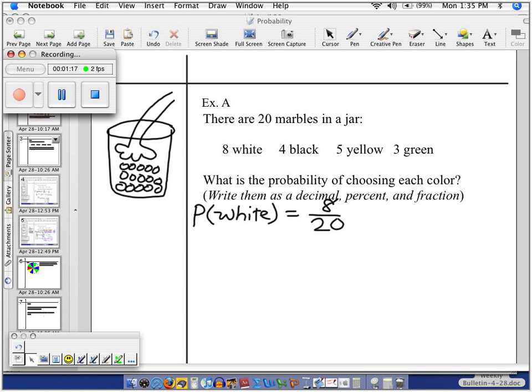So if I can label these, the top number is my desired outcome. This is what I'm actually wanting. I want to pull a white marble, in this case. So that number is on top of my fraction. And underneath is how many possible outcomes there are. How many total outcomes there are. So every time I go into this jar, there are 20 things that could happen. Because there's 20 marbles.